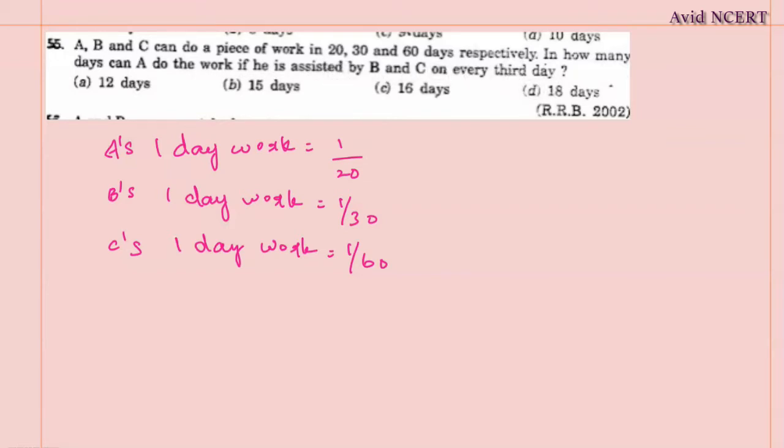First day work of A is 1/20. Second day work of A will be 2 days work, which is 1/20 times 2, which equals 1/10.